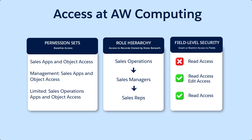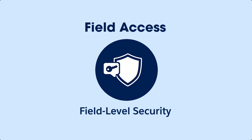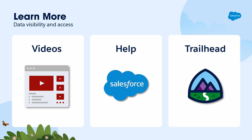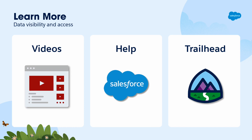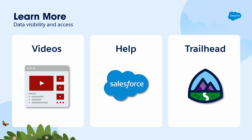Great! We just applied field level security on the discount percentage field so that only the users who need that data will be able to access it. Now you've learned how to control access to specific fields for your users based on permission sets. To learn more about visibility and access, check out all the videos in this series. Up next, we'll dive into record access with sharing rules. You can also search for these topics in Salesforce Help, or come join us on the trail at trailhead.salesforce.com. Thanks for watching!